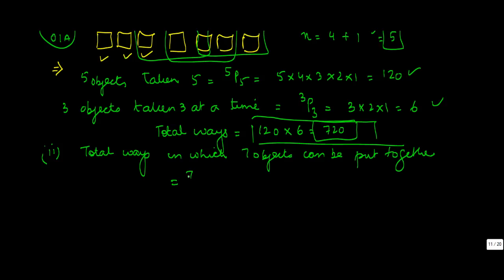...will be 7P7, seven alphabets all taken at a time. So this will be 7 × 6 × 5 × 4 × 3 × 2 × 1, which is 120 × 7 = 5040.